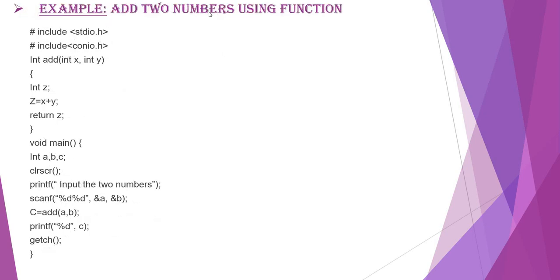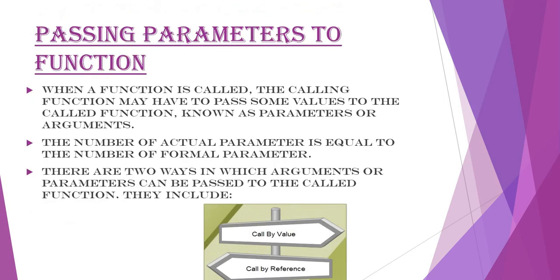Another example is add two numbers using function, as you can see here. Now, passing parameters to function. When a function is called, the calling function may have to pass some values to the called function known as parameters or arguments. The value of actual parameter is always equal to the value of formal parameter. There are two ways in which arguments or parameters can be passed to the called function. They include call by value and call by reference.